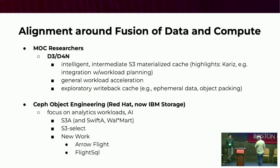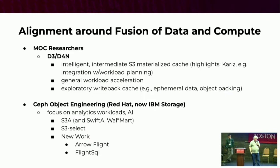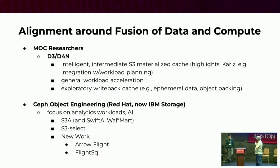Some of what we've done here involves workload integrations. S3 Select is a primitive form of S3-enabled predicate pushdown — you can inject queries into the S3 storage service and return consolidated results; that one's by Amazon, and some of our work extends it. We also have an Arrow Flight interface to the SAF object storage, and Flight SQL experiments going on.